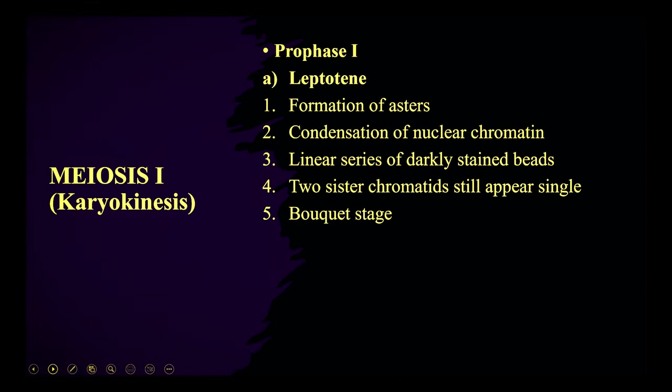Coming to prophase 1, the first sub-phase is leptotene, also called leptonema or thin thread stage. The first thing here is there will be the formation of asters — the centriole is going to get separated and move to each pole, and from that centriole a star-like structure called asters is going to form.